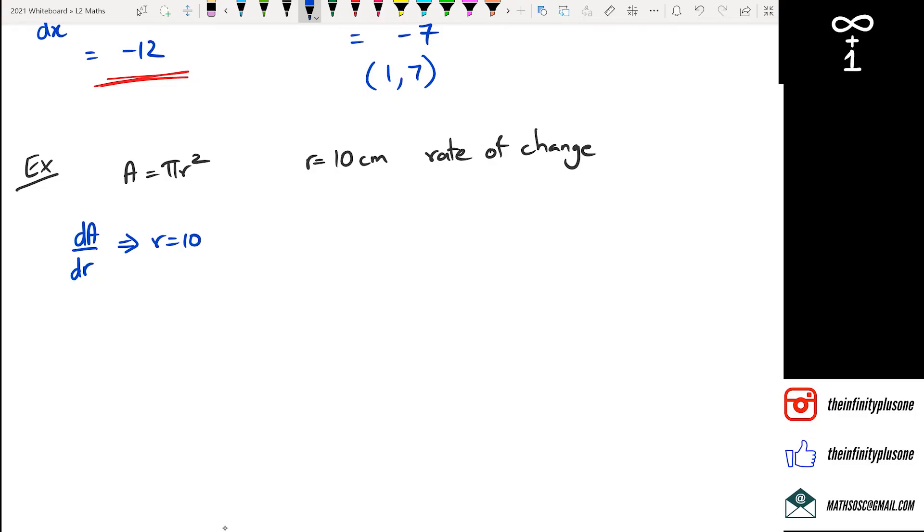Remember, that's what you're doing at measurement level one. At level two calculus, you're going to have to differentiate something and then substitute a value to actually try and figure it out. So we're going to differentiate A equals πr squared. But really if you think about it, in the previous question we had a function like y equals 3x squared minus 12x plus 2.